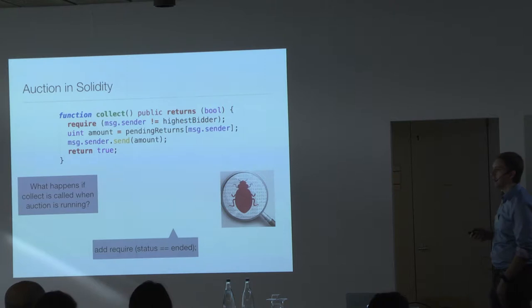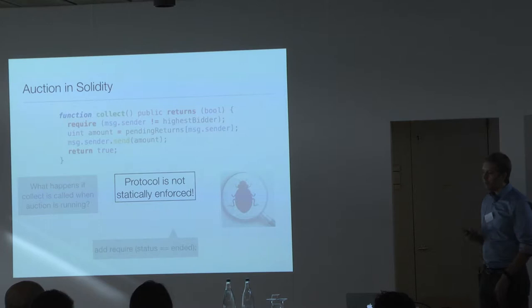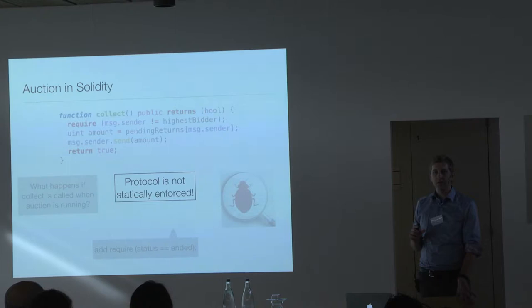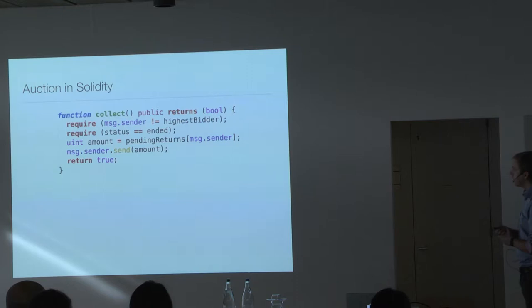The first bug: what happens if you call the collect function while the auction is still running and has not ended? According to our protocol that should not be possible. The fix is to add a require statement that the status must be ended before this function can run. The root cause is that the protocol of interaction with the contract is not statically enforced — you want the language to enforce that this protocol really holds.